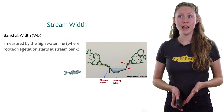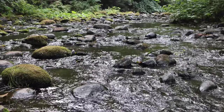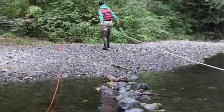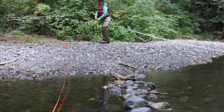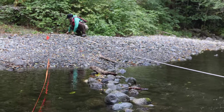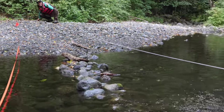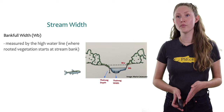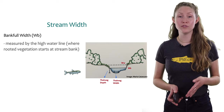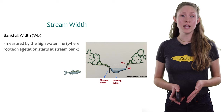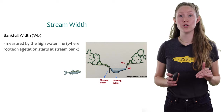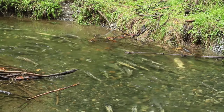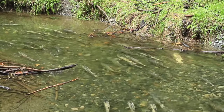Streams can also be characterized by how wide they are. Stream width tells us about the amount of habitat available for fish and how much water a stream might be able to hold. Bank full width is measured at the high water line — the point where rooted vegetation starts at the stream bank. We know rooted plants don't like to be fully submerged all the time, so this line tells us where the water reaches when the stream is full. Bank full width also tells us the maximum width available for salmon to swim during high water events.